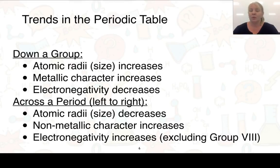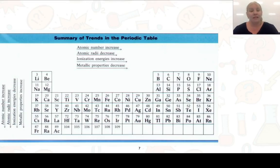When we're moving across a period, so from left to right, our atomic radii or size, now this time it decreases. Non-metallic character increases and our electronegativity increases as well, but we must exclude group 8 for electronegativity. You could write these summaries onto your periodic table.